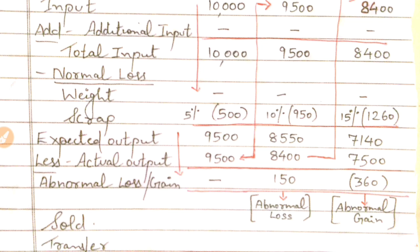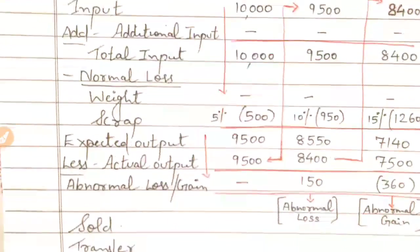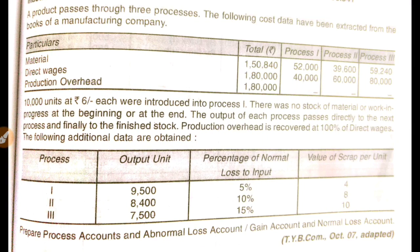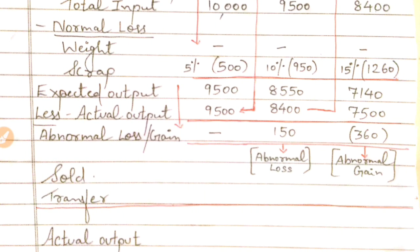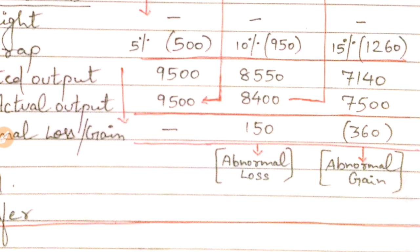The expected output for Process 3 is 7,140 units. The actual output given in the question is 7,500 units. So we calculate 7,140 minus 7,500 = negative 360. Since we are getting a negative figure, this is abnormal gain — not abnormal loss. Remember: a negative answer means abnormal gain, a positive answer means abnormal loss.